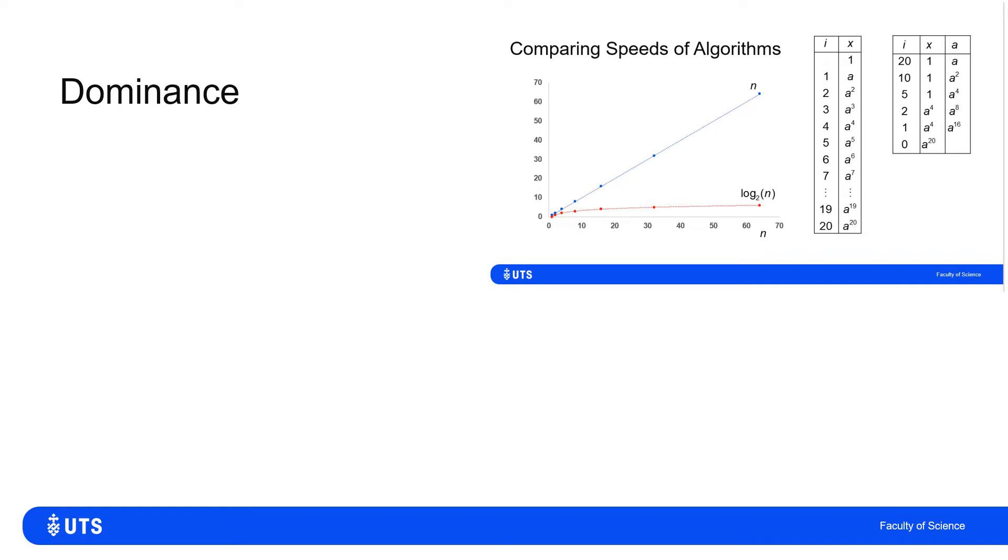In the previous video, where we looked at the speeds of algorithms, and specifically an algorithm to multiply a to the n for a large n. In one algorithm, we just multiplied by a, then multiplied by a, then multiplied by a, n times over. And we got there. But it grew very slowly. If I wanted to change from calculating a to the 20th power to a to the 40th power, there's 20 more steps.